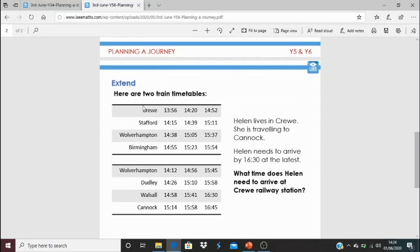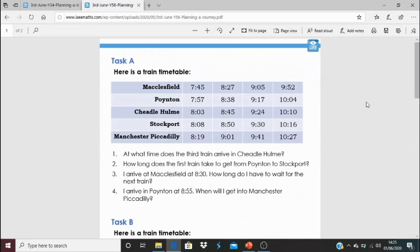For the extend task, sometimes you need to look at more than one train timetable to plan out a journey. From Crewe, you could get directly to Stafford or Wolverhampton or Birmingham, but there might not be a train from Crewe to Dudley. You might need to think, I can get from Crewe to Wolverhampton or Stafford, and then get a train from there to the next place. The question is: Helen lives in Crewe. She's travelling to Cannock. There isn't a direct train from Crewe to Cannock, so you're going to have to think about what you're going to do. Good luck with that. See you again tomorrow. Thanks for joining in.